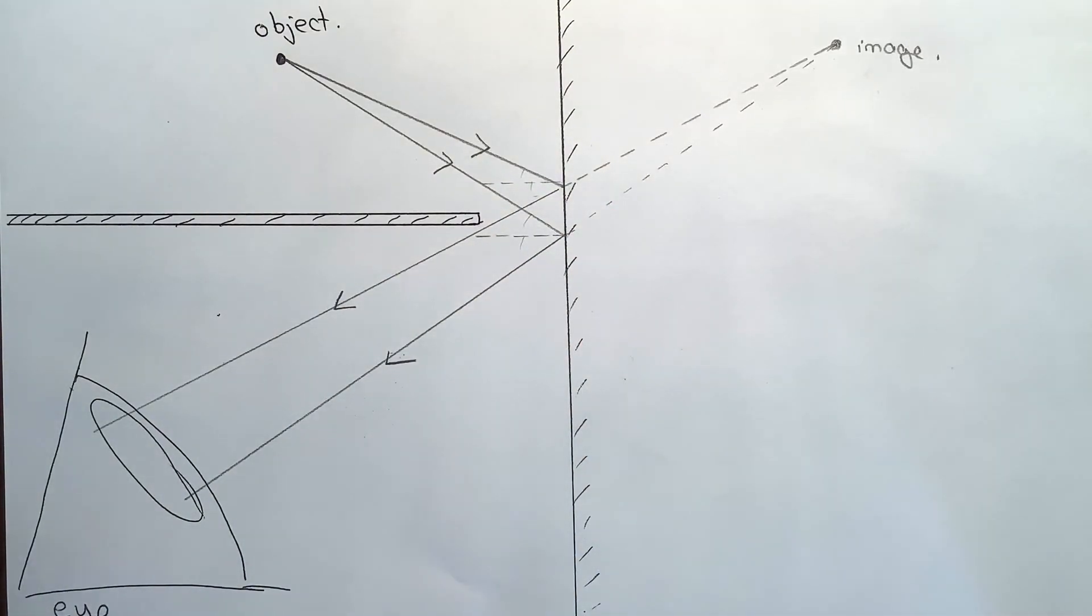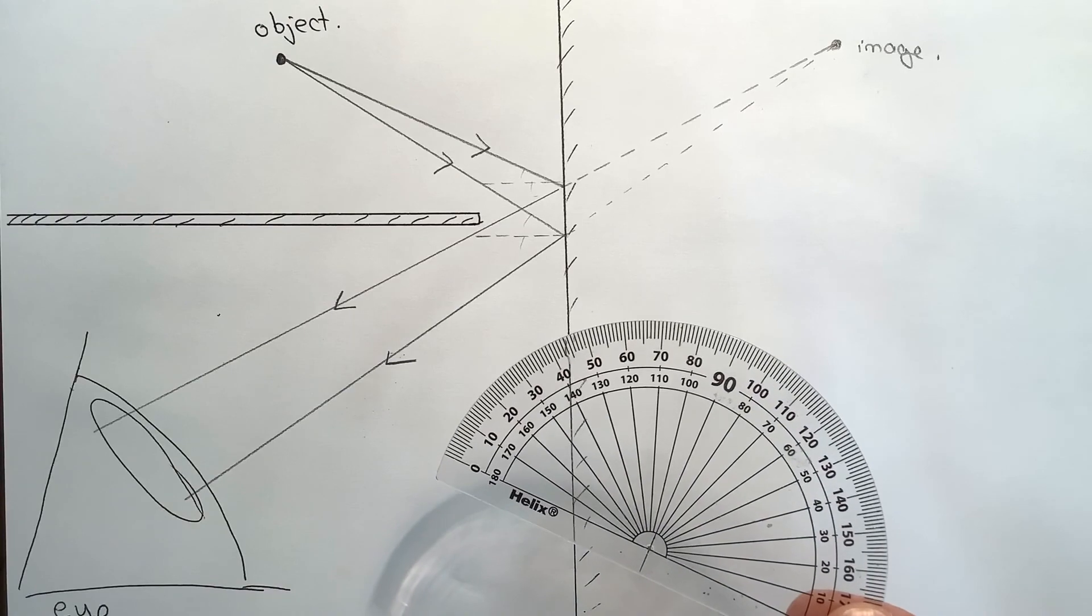And by doing this so-called cheat method, I've managed to construct that ray diagram very quickly, and I didn't even need to use my protractor.